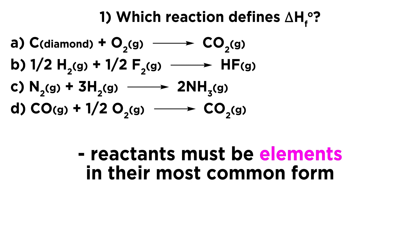So elements can come in different allotropes. It has to be the most common one, and it certainly must be an element. We cannot have any compounds as a reactant. That would defy the definition of the heat of formation. We're forming some compound from its constituent elements in their most common form.